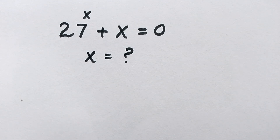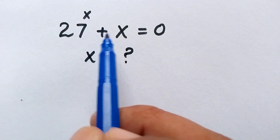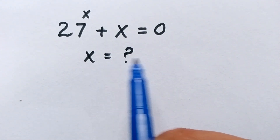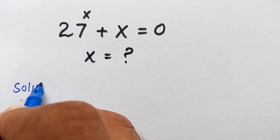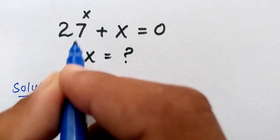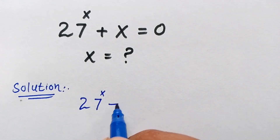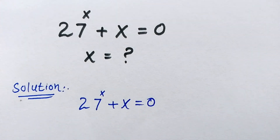Hello, you are welcome. How to solve this interesting math question, which is 27 to the power of x plus x is equal to zero, and we have to find the value of x. The question is 27 to the power of x plus x is equal to zero.